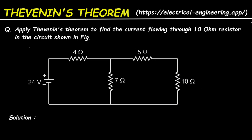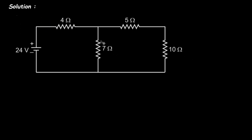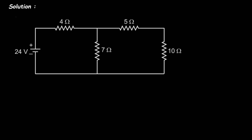Solution. First of all, we will take this circuit. Since we have to find the current through this 10 ohm resistor, this will be our load resistor RL. Let's say this is terminal A and this is terminal B.